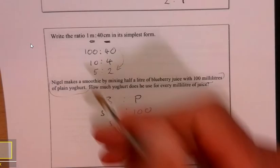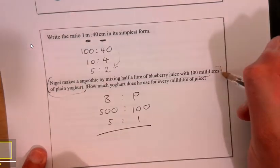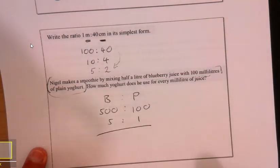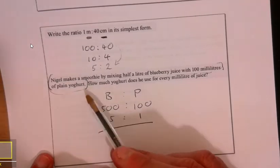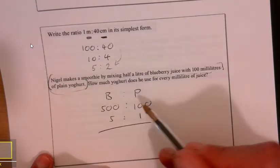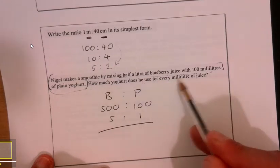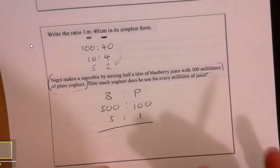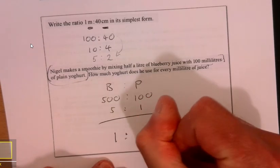I haven't actually read the question. I don't actually know what the question was. All I've done is just taken that sentence and rewritten it, made some sense of it. Now we're going to go and read that question. How much yogurt does he use for every milliliter of juice? So it's blueberry juice to plain yogurt.